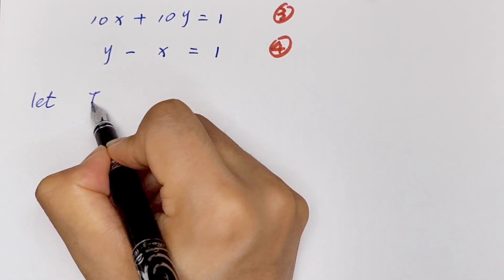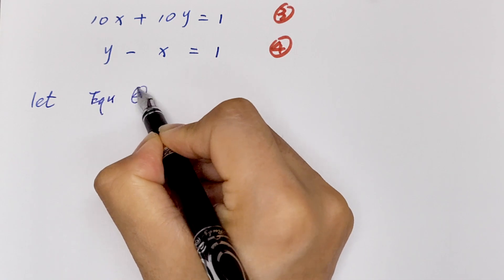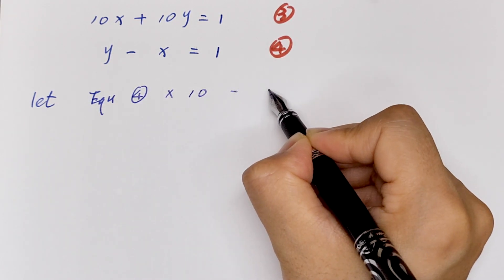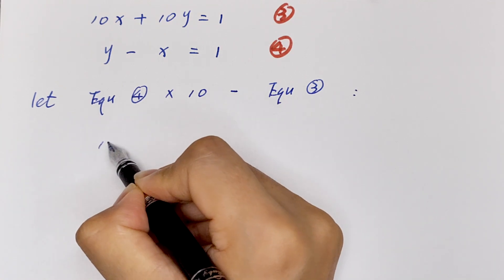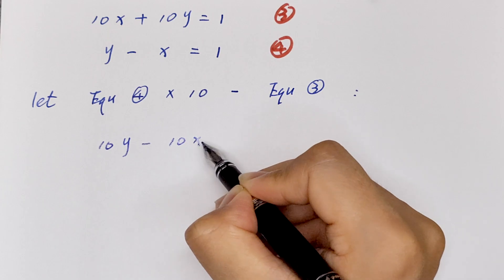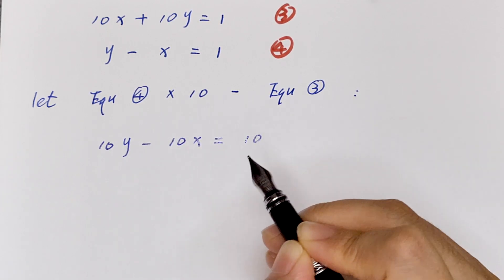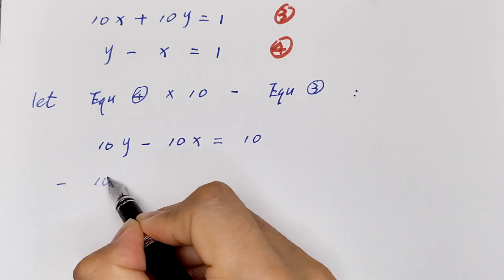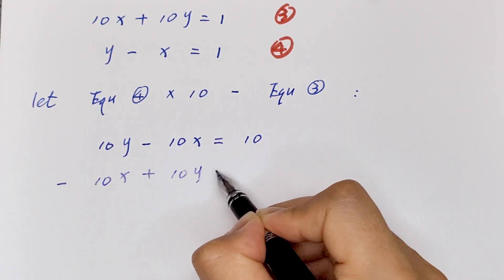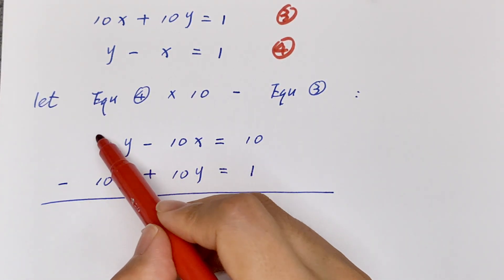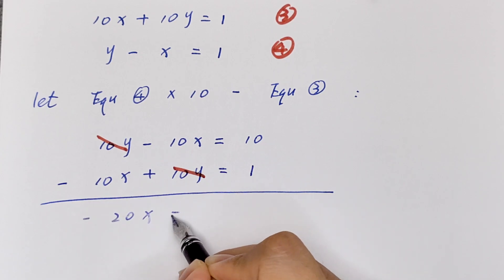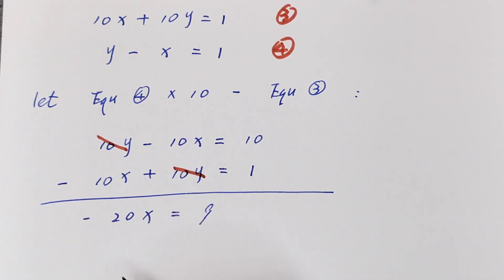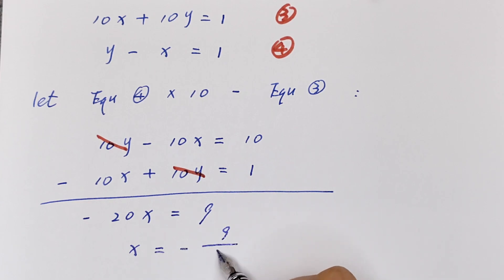Now we let equation 4 multiplied by 10 minus equation 3. It will be 10y minus 10x equals 10, minus (10x plus 10y equals 1). The 10y terms cancel, so negative 20x equals 10 minus 1 is 9, so x is equal to negative 9 over 20.